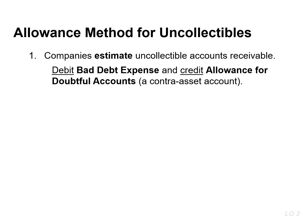Companies must use the allowance method for financial reporting purposes when bad debts are material or significant. There are two primary steps in the allowance method. First, companies estimate uncollectible accounts using an adjusting entry at the end of the period, which debits or increases bad debt expense and credits or increases allowance for doubtful accounts, which is a contra asset account. The business records bad debt expense based on estimates developed from past experience, and uses the allowance for doubtful accounts to house the pool of unknown bad debts.